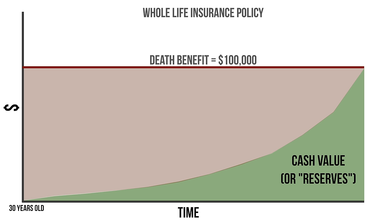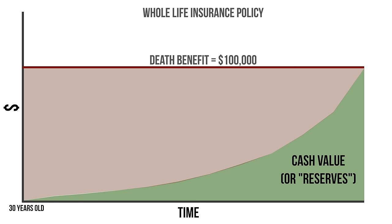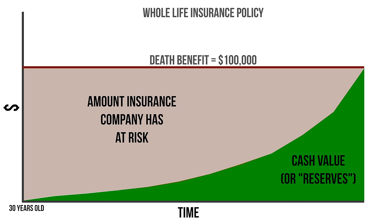The difference between the death benefit and the reserves is the amount that the insurance company has at risk. They have this cash, and so they would have to pay out the difference in order to give you your $100,000 death benefit. So if someone had this policy until they're around 100, the insurance company may not actually have any risk at that point, as the reserves may be equal to the death benefit.